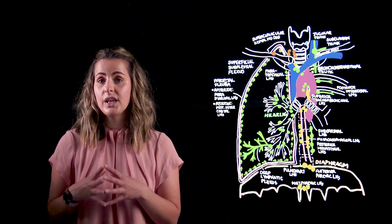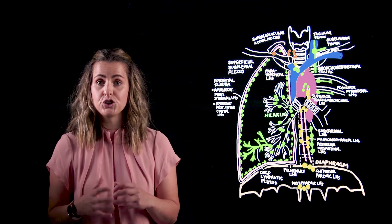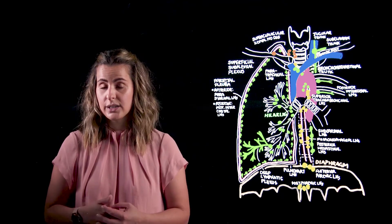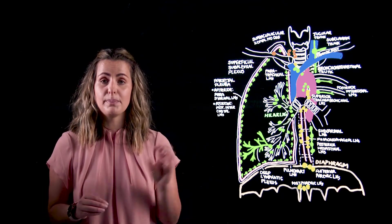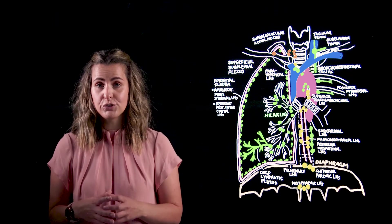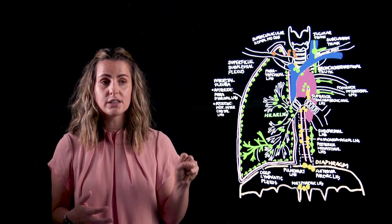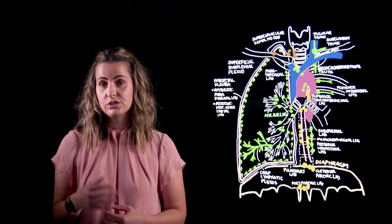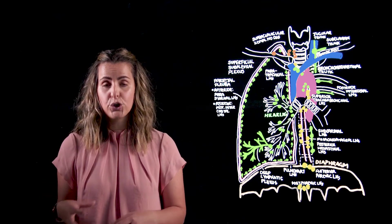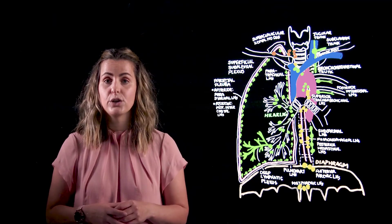Finally I just want to cover some of the other afferent drainage associated with the bronchomediastinal trunk. We've already mentioned that the paratracheal and the parasternal lymph nodes will send their efferent drainage to the bronchomediastinal trunk. We also have contributions from the anterior mediastinal nodes and the posterior mediastinal lymph nodes.